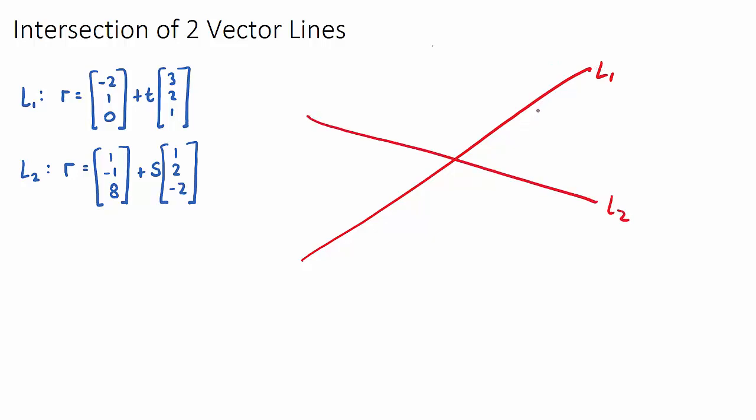We want to see, firstly, do they intersect, or are they just in space where they'll never intersect? That's called skew, but these ones will intersect. And we want to find where it intersects.